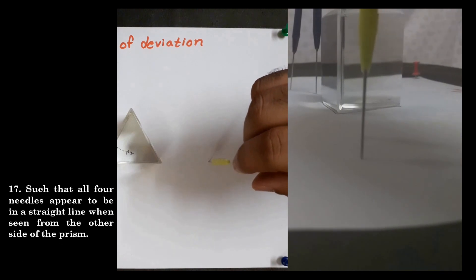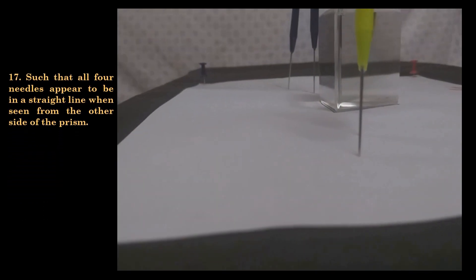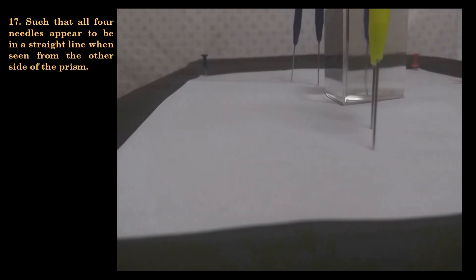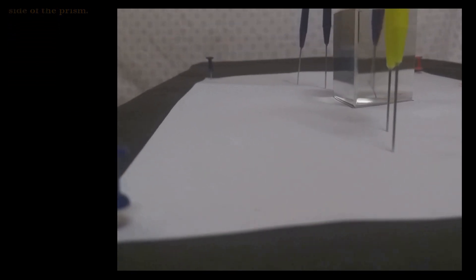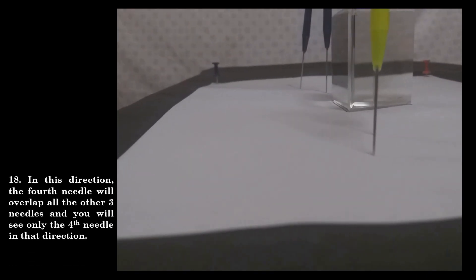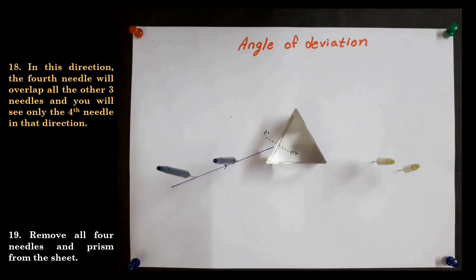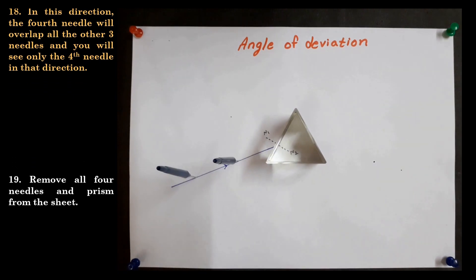These two needles should be placed in such a way that all four needles appear to be in a straight line when seen from the other side of the prism. In this direction the fourth needle will overlap all the three needles and you will see only the fourth needle. Remove all four needles and prism from the sheet.